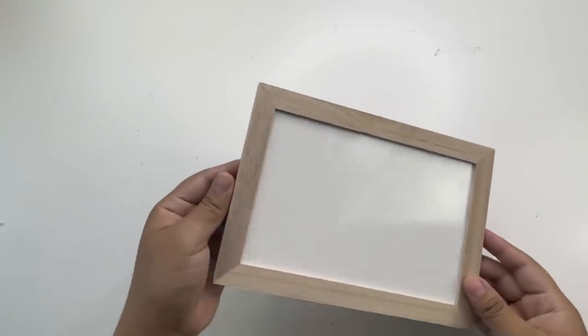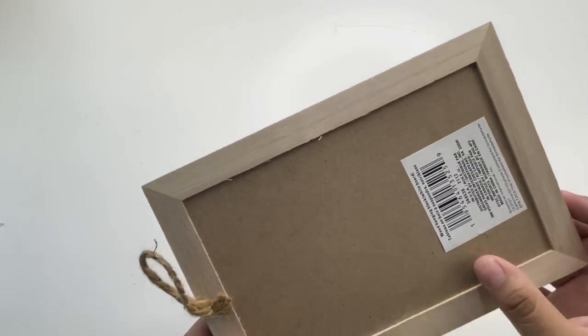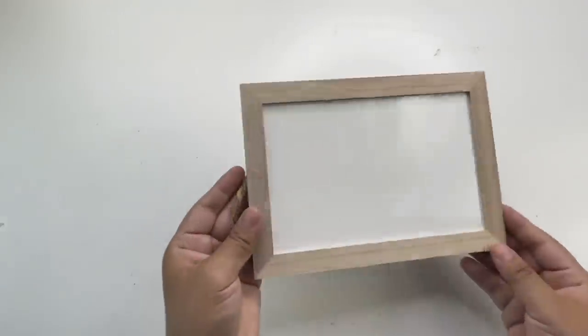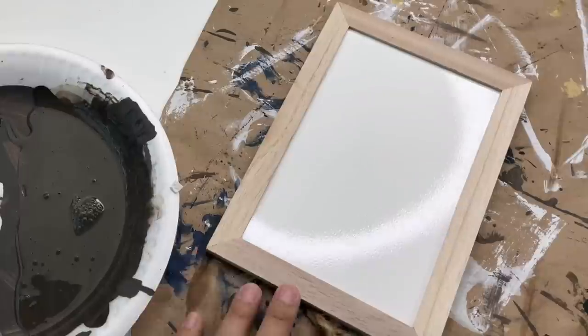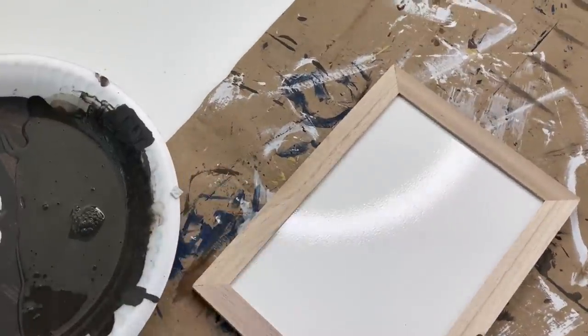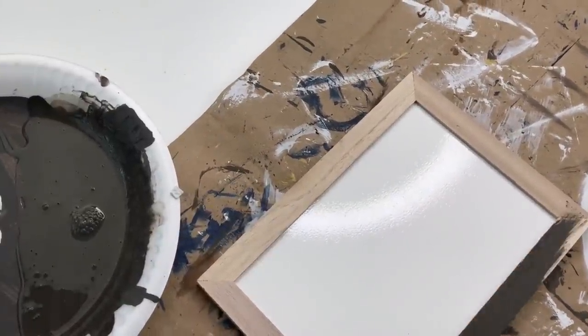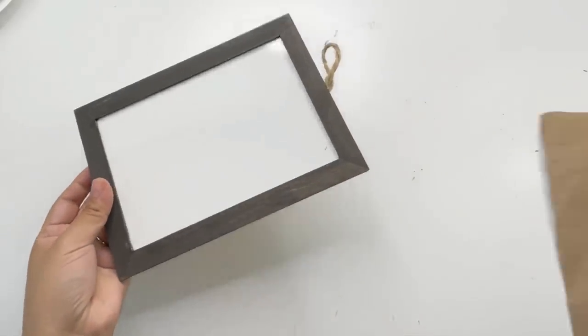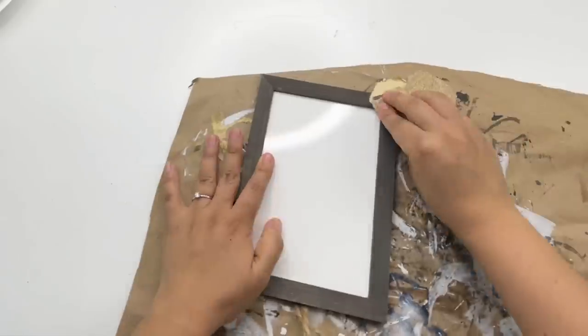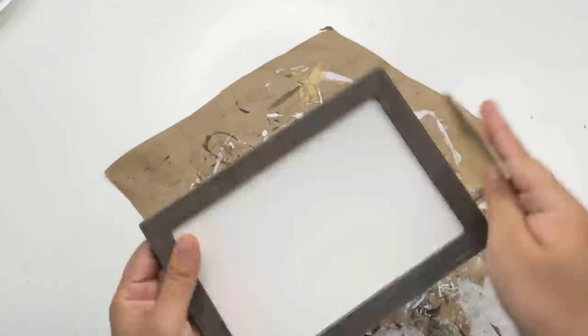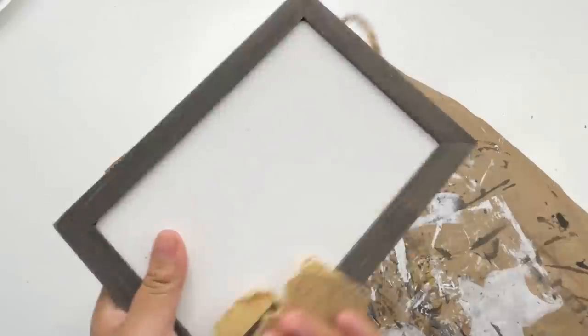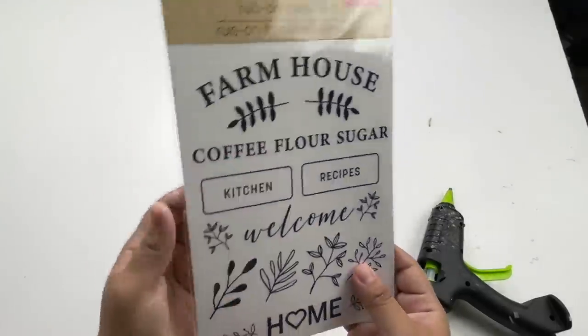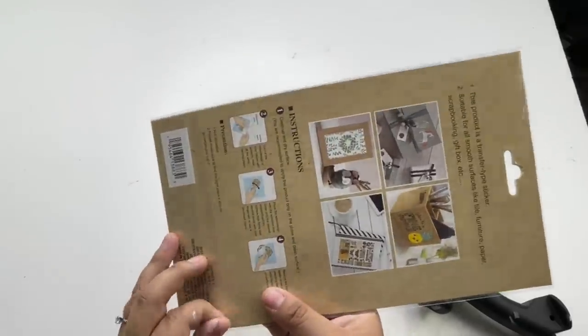For my next DIY I'm using another Dollar Tree new item. They carry two different colors, white and black, so I'm going to start by painting the frame using the same mixture I've been using. And you can leave it like this, but I decided to distress this since I already did my other ones, and I think it looks so much better like this.